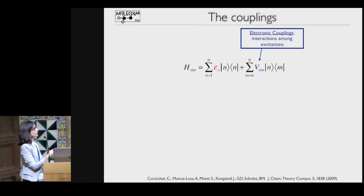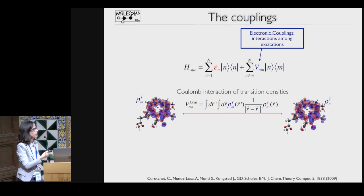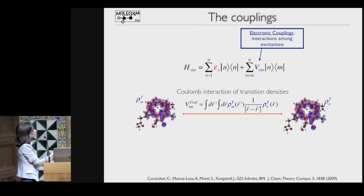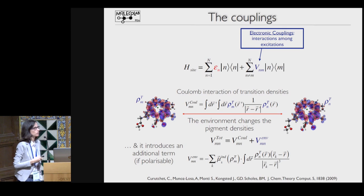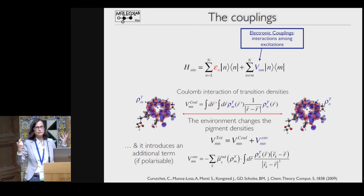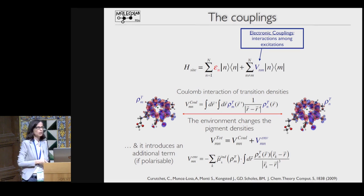The other ingredient is the coupling between excitations. For bright excitations, the interaction is dominated by Coulomb interaction, so we calculate the coupling numerically as the Coulomb interaction between transition densities localized onto pigments. Adding the environment modifies the transition density, but also introduces a new term which can be interpreted as a screening term in the Förster language—representing the interaction of induced dipoles on the environment due to the transition on one pigment interacting with another pigment. This term exists because the environment is polarizable, making it very important to include polarizable embedding.